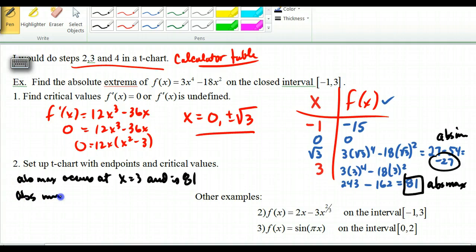My absolute min occurs at, where is it? Negative 27. So it's x equals square root of 3 and is, what is my lowest value? Negative 27. So you can summarize this in that way.